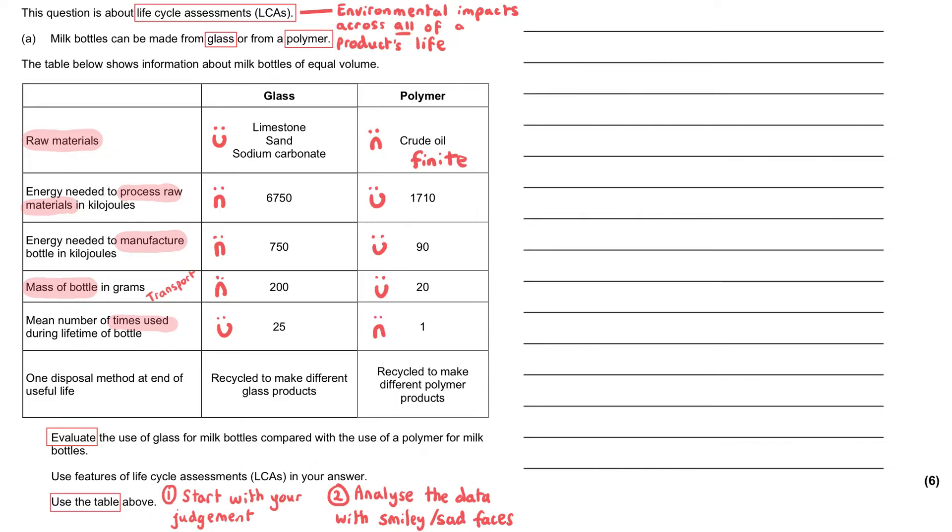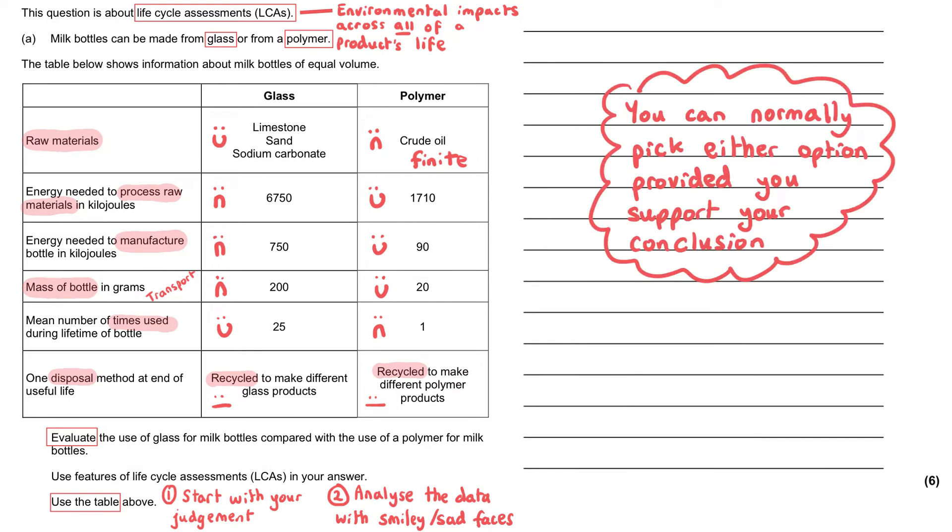The disposal method at the end of life, we can recycle the glass bottle to make different products, and we can recycle the polymers. So since they can both be recycled, this is probably a draw. Now we've done our brief survey of the data, you can make your own decision. You could be just incredibly quantitative about this and refer to the fact that the glass has got two smiley faces and the polymer has got three smiley faces. So the polymer seems better.